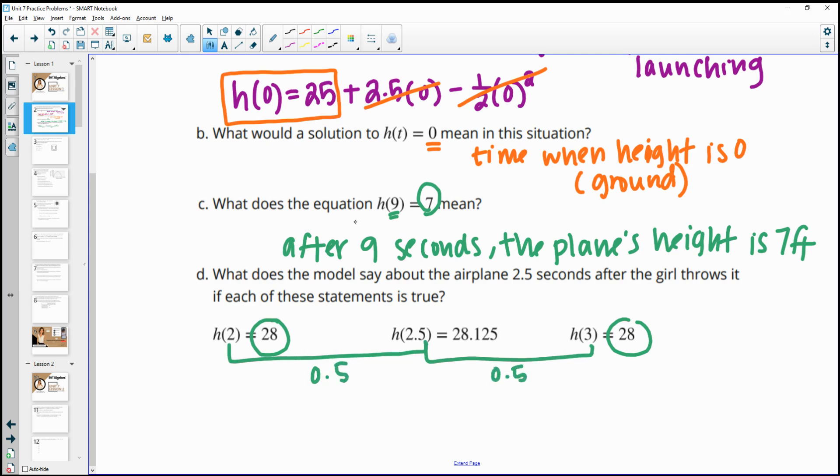So what this tells us is that this value here is the vertex, right? Or the maximum value.